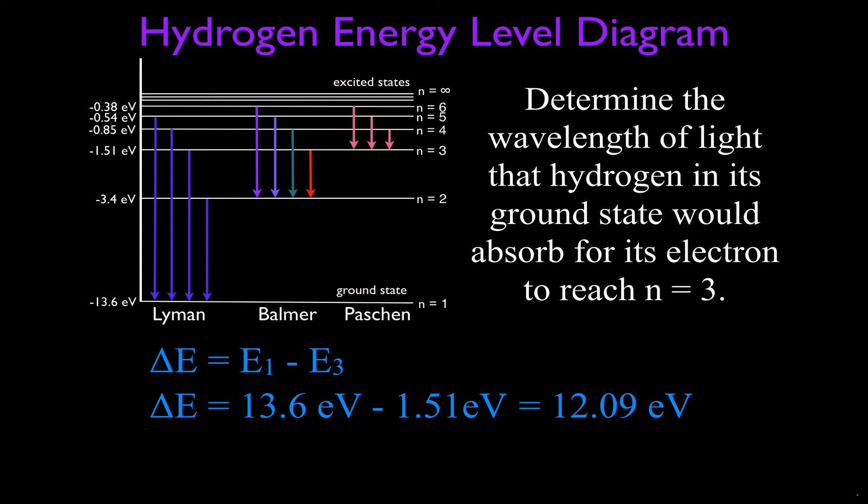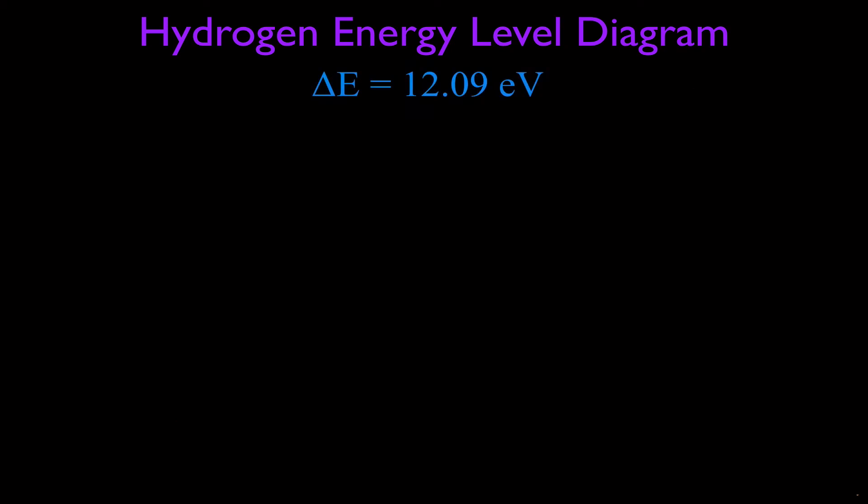Now really these problems, once we've figured that out, really just become a conversion where we convert from electron volts to joules, to meters, to nanometers, to frequency, and all that kind of stuff. So what we're going to do is just convert now and find out what wavelength of light corresponds to 12.09 electron volts.